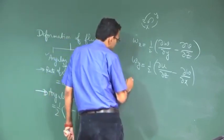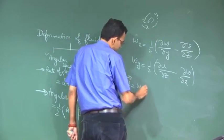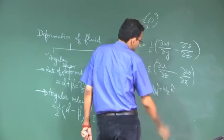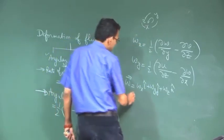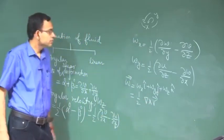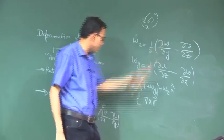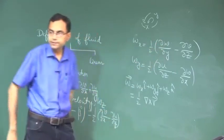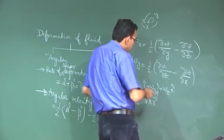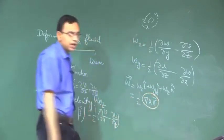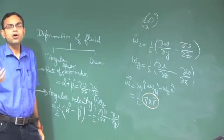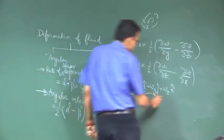If you write the angular velocity vector, you can simply work out and see that this is half of the curl of the velocity vector, because the components of the curl of the velocity vector are given by these terms which appear in the brackets. This curl of the velocity vector has been a very important definition in the fluid mechanics world for a very long time, as introduced by mathematicians, and it is known as vorticity.